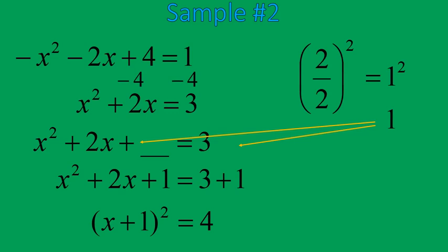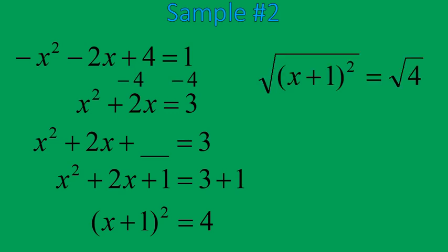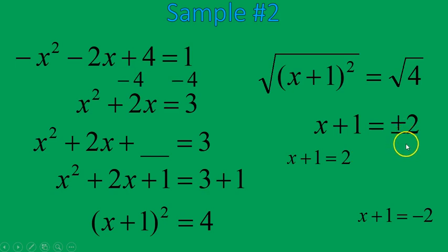I'll take the square root of both sides and solve just like the last one. I will have x plus 1 equals positive 2, and x plus 1 equals negative 2. I'm writing them out before solving to emphasize the plus or minus. Subtracting 1 from both sides gives my final answer: x is equal to 1 and x is equal to negative 3.